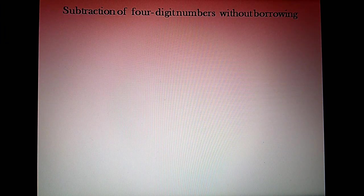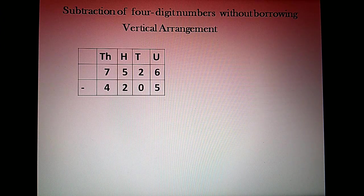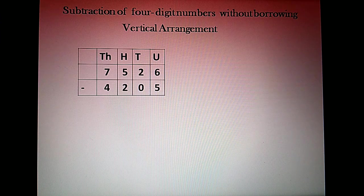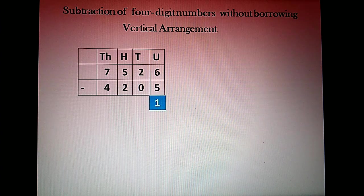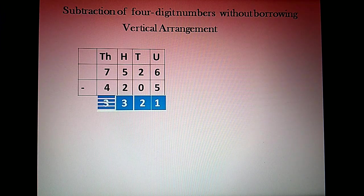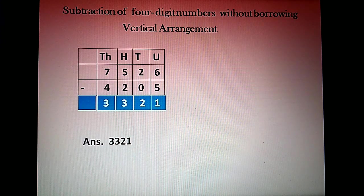Now, subtraction of four-digit numbers without borrowing using vertical arrangement. The number given is 7,526 minus 4,205. We start from the units place: 6 minus 5 is 1. Tens place: 2 minus 0 is 2. Hundreds place: 5 minus 2 is 3. Thousands place: 7 minus 4 is 3. So our answer is 3,321.